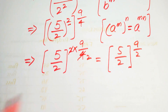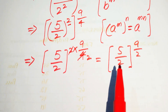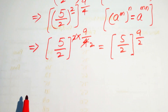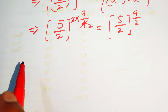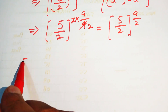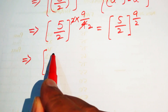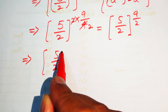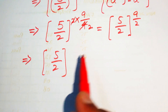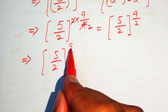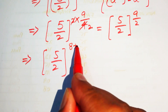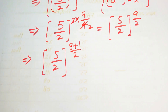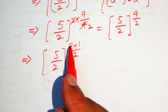Now we focus on 9 over 2, and we break this 9 by rewriting it as 8 plus 1. So we write the exponent as 8 plus 1 over 2.